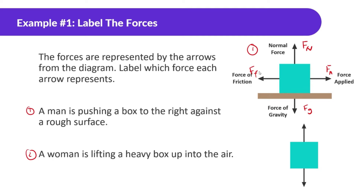For diagram two: a woman is lifting a heavy box into the air. We should know there's always gravity — it's always straight down — so start with drawing the force of gravity. Then if the woman is lifting it up, she's applying a force to it — so that's the force applied.